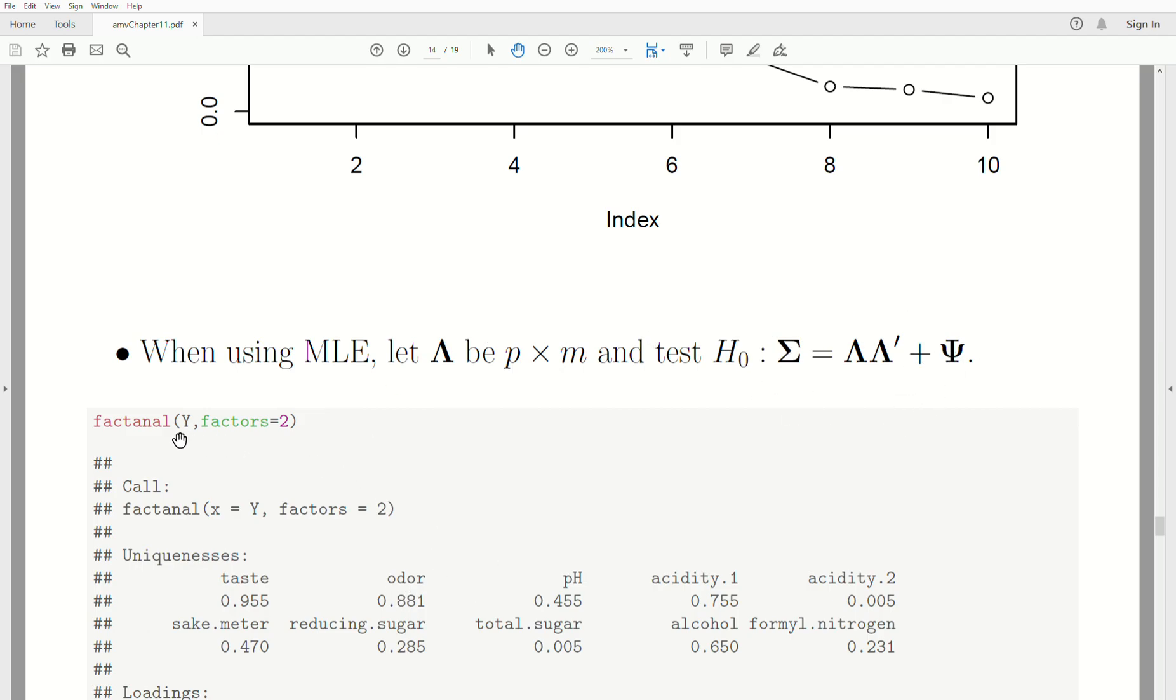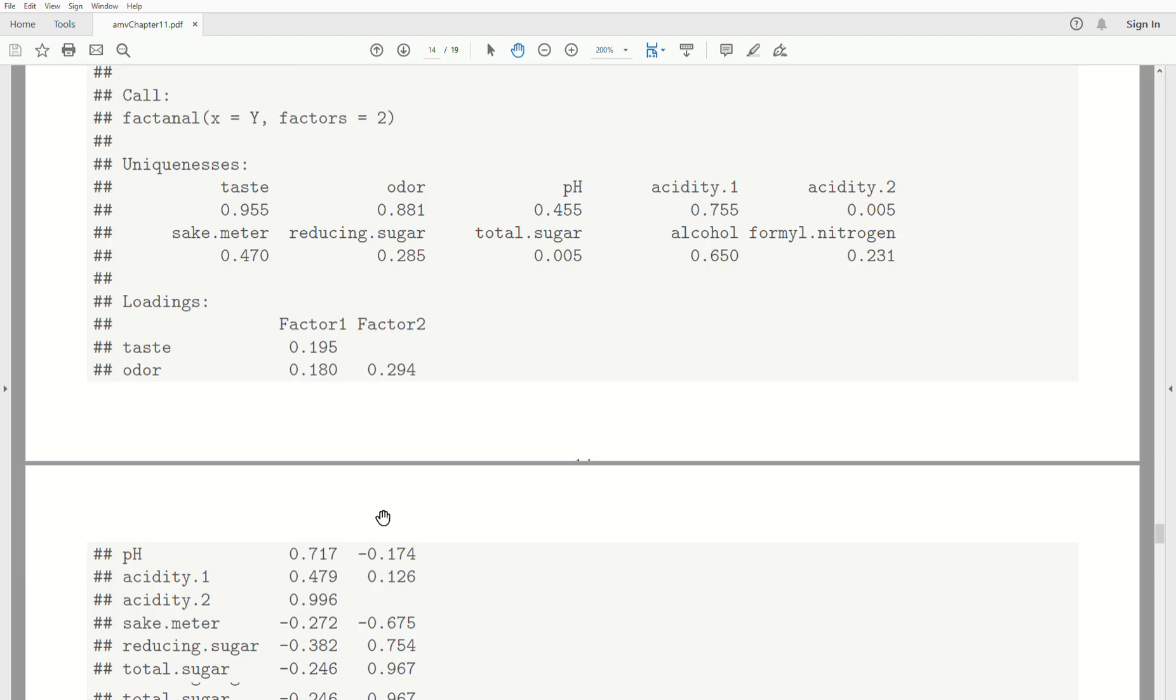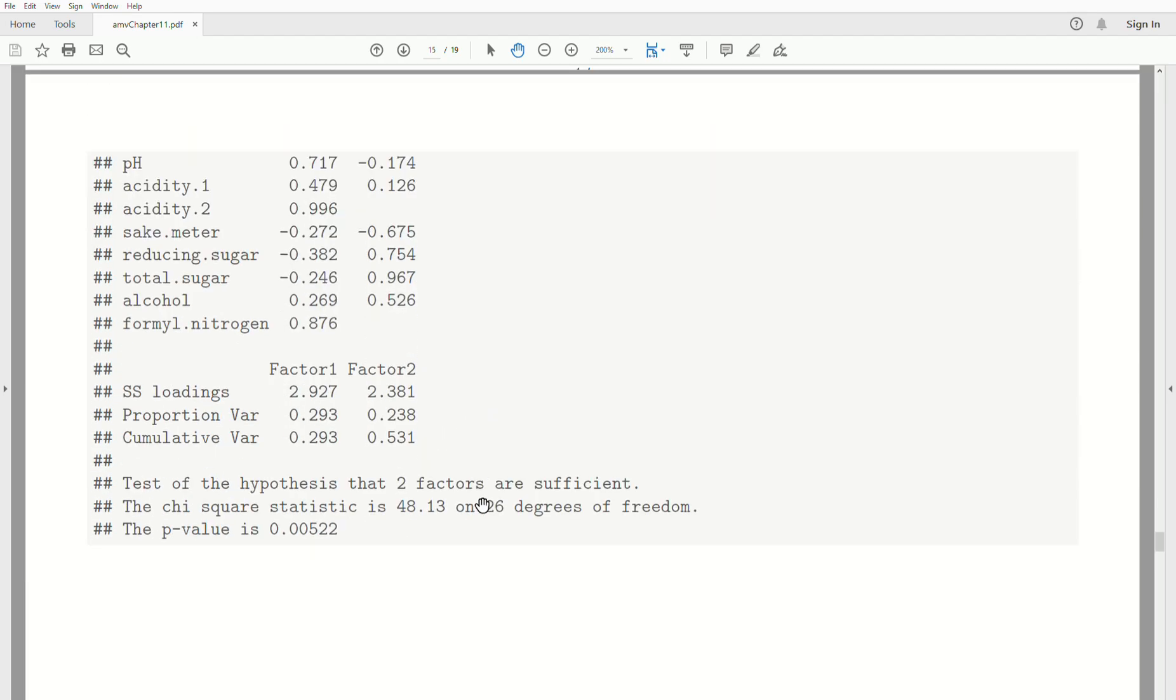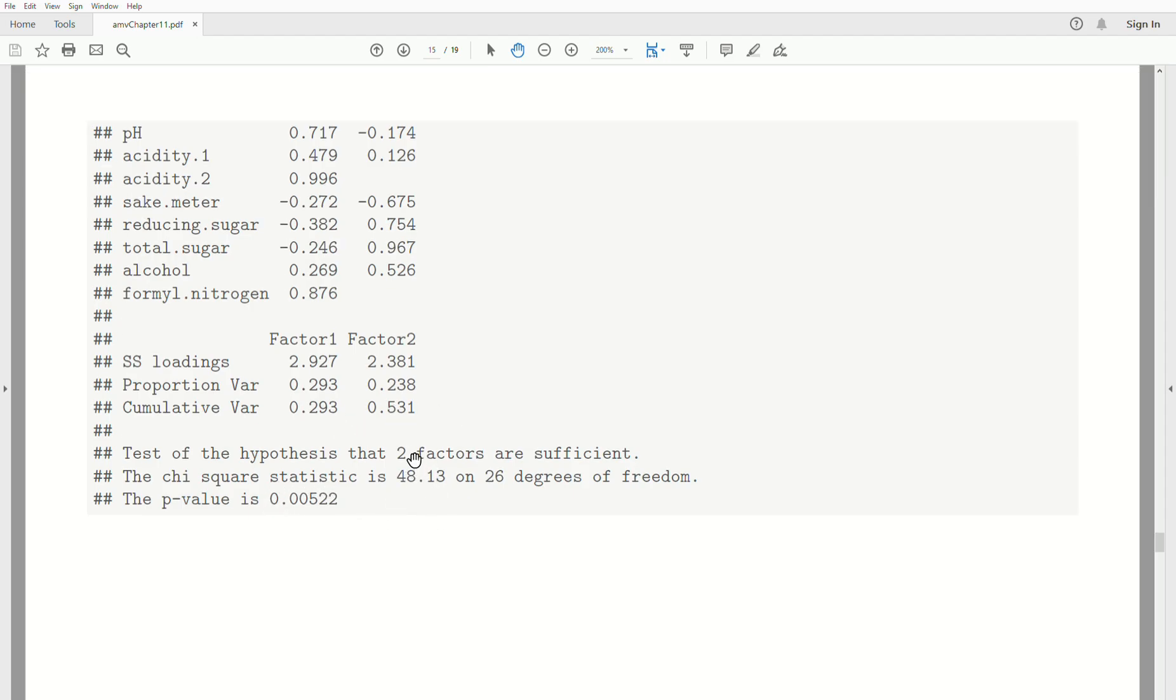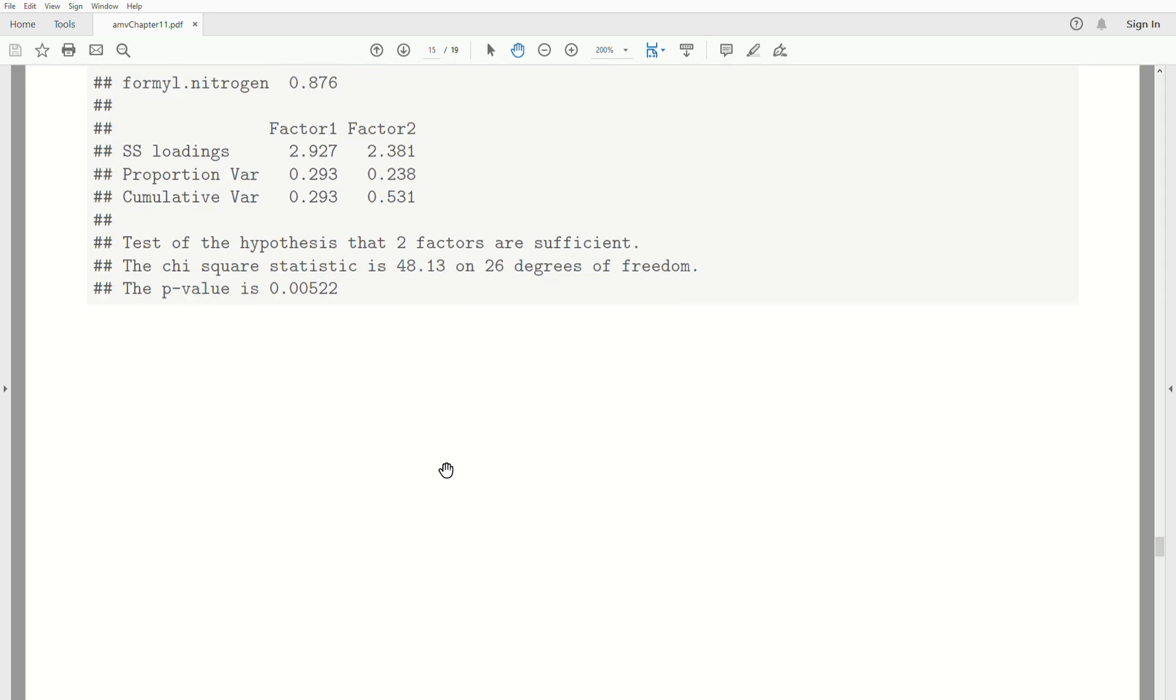In this example, I'm going to use the same data but just two factors. It prints out the uniqueness, the loadings for both factors, and the cumulative proportion of the variance. But look at the test. Is the two-factor model sufficient? The p-value is really close to zero, so that's evidence that the alternative is true, and that was that the two-factor model was not sufficient. There's evidence that we shouldn't use a two-factor model. But we have to keep investigating how many factors we want. Based on the other three criteria, four was an appropriate number.